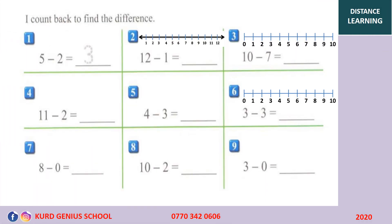I count back to find the differences. So 5 minus 2. We say 5 minus 2. We count back two numbers — 1, 2. So 5 minus 2 equals 3. We write 3 here.